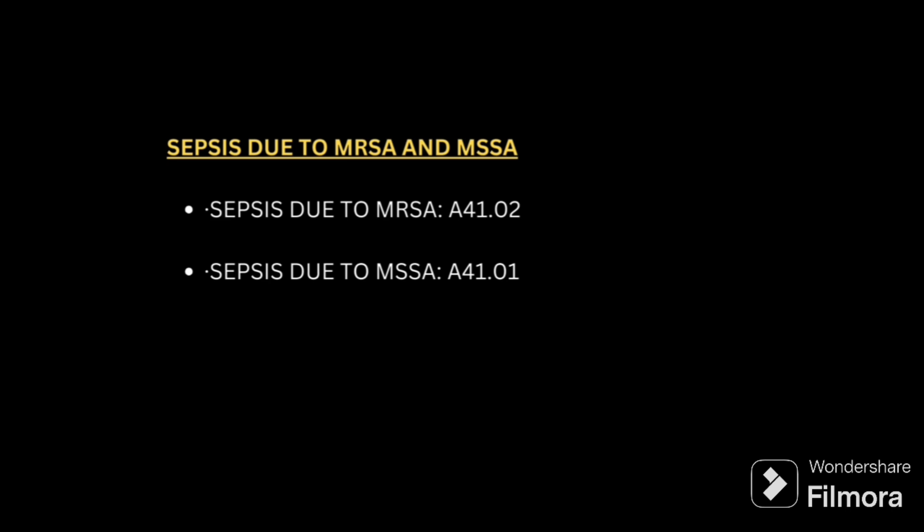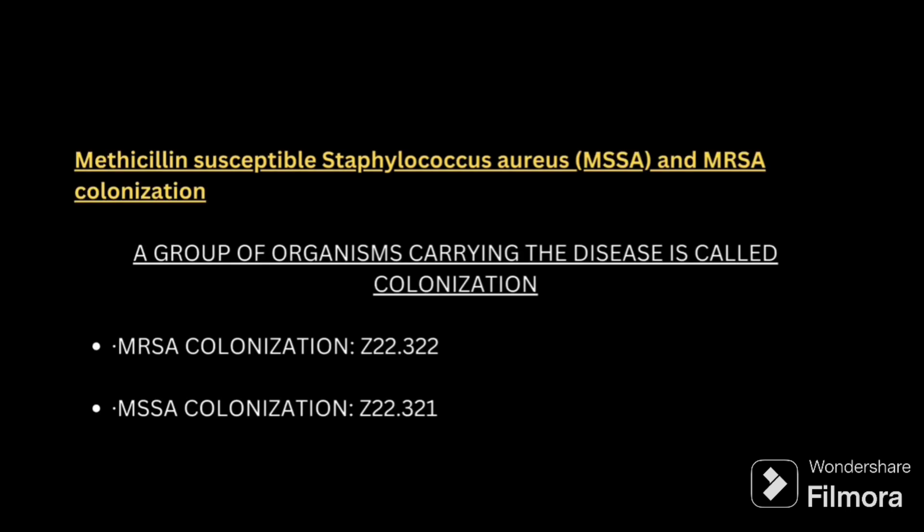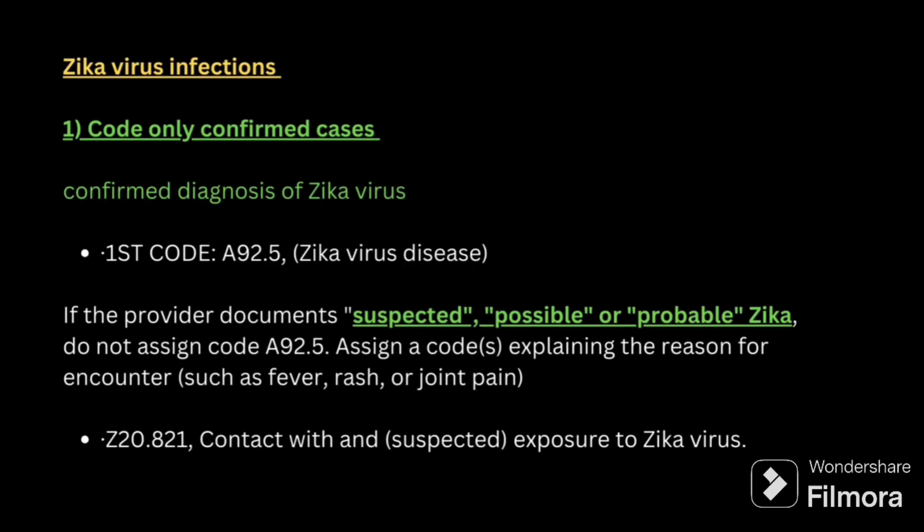Next: sepsis due to MRSA and MSSA. MRSA means methicillin-resistant Staphylococcus aureus and MSSA means methicillin-susceptible Staphylococcus aureus. Sepsis due to MRSA is coded A41.02 and sepsis due to MSSA is coded A41.01. For colonization — meaning a group of organisms carrying the disease — MRSA colonization is coded Z22.322 and MSSA colonization is coded Z22.321.